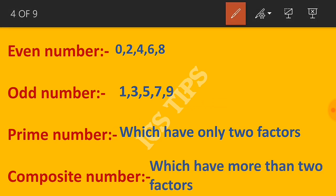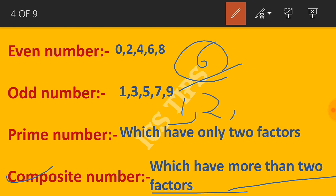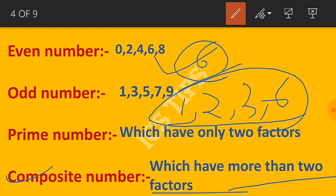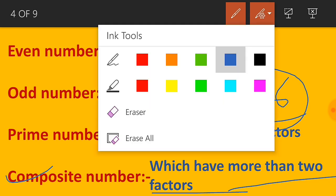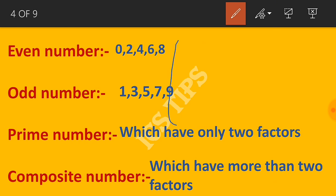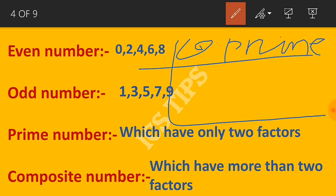Composite numbers have more than two factors. For example, 6 has factors 1, 2, 3, and 6 - four factors total.